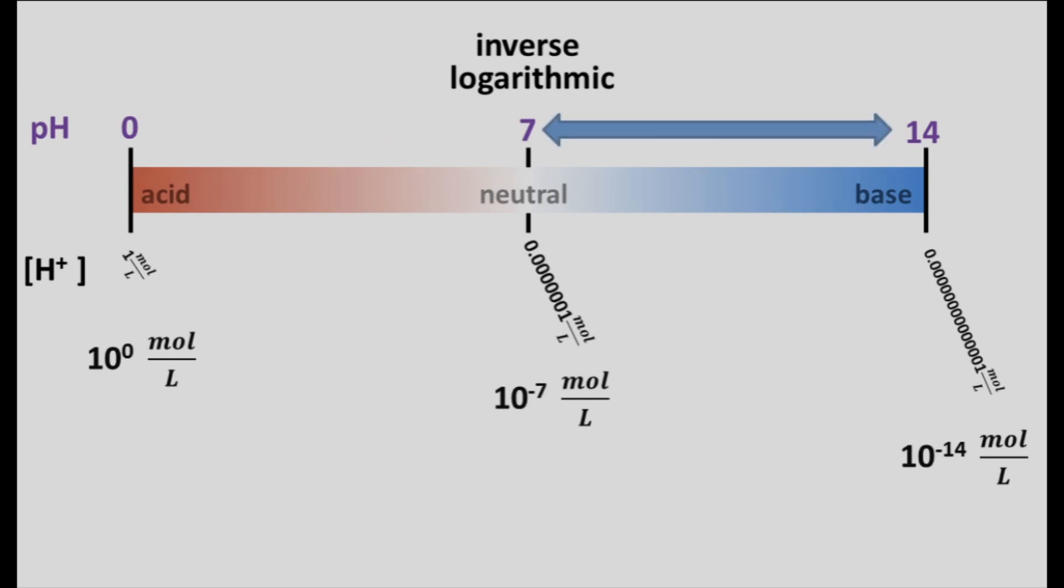So it's a tenfold difference for every point. Therefore, from a pH of 14 to a pH of seven is a 10 million fold increase in protons. And from a pH of seven to zero, there's also another 10 million fold increase in protons.